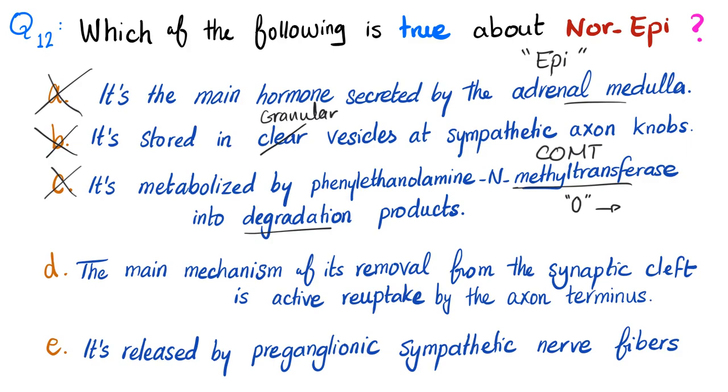Option D - the main mechanism of its removal from the synaptic cleft is active reuptake by the axon terminus. This sounds good. How about E - it's released by preganglionic sympathetic? No, any preganglionic fibers release acetylcholine, not norepinephrine. So the answer is D.